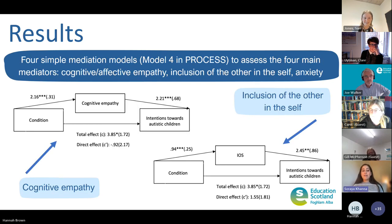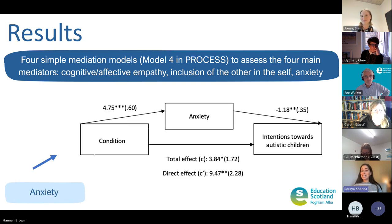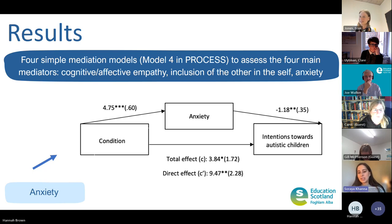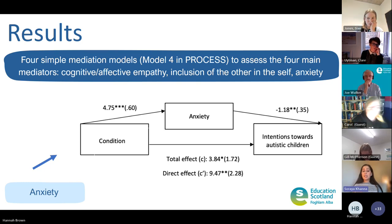The analysis also revealed that increased cognitive empathy and increased inclusion of the other in the self significantly mediated the association between being in the experimental group and positive intentions towards autistic peers. Anxiety actually increased as a result of the intervention rather than reduced as I had hypothesised, which then led to less positive intentions. However, the total and direct effect were still positive, indicating that taking part in the experimental group continued to be associated with more favourable attitudes. My tentative hypothesis is that increased cognitive empathy and inclusion of the other in the self might act as a buffer against the anxiety children experience when imagining contact with a disabled peer.